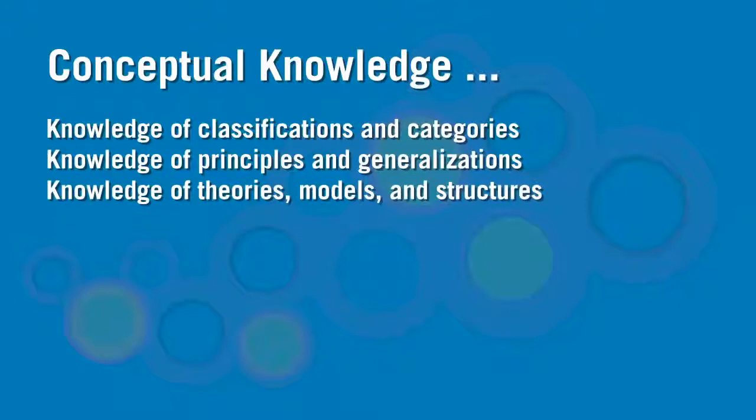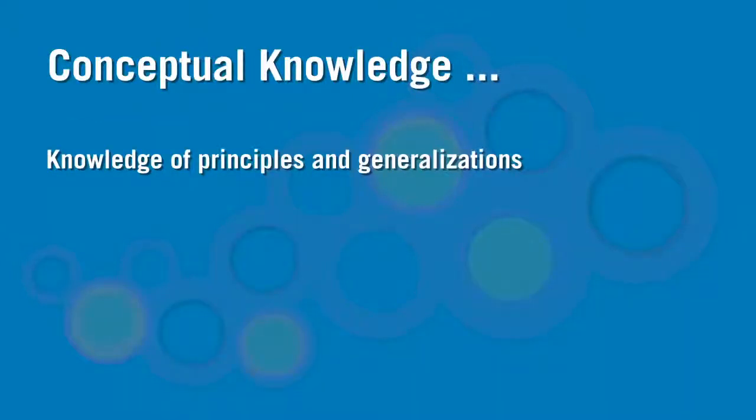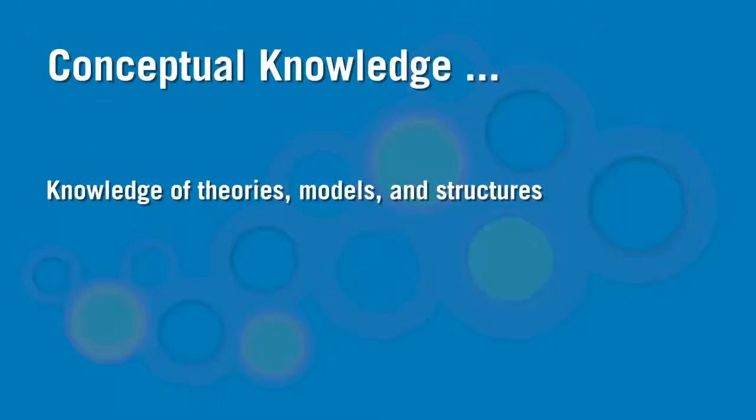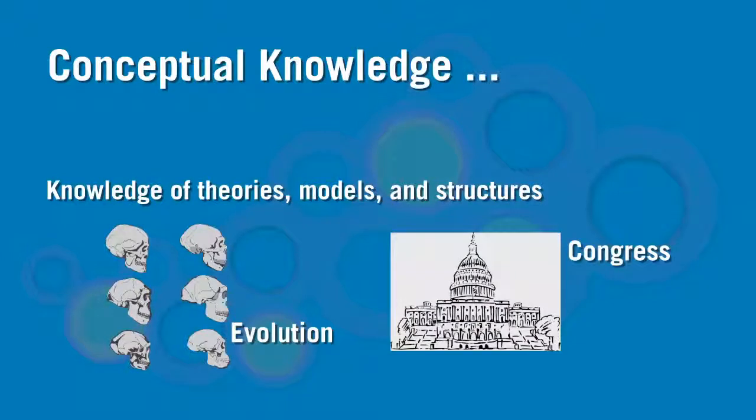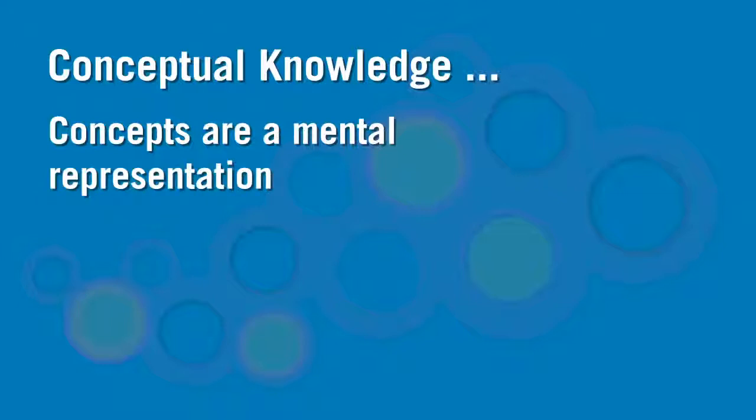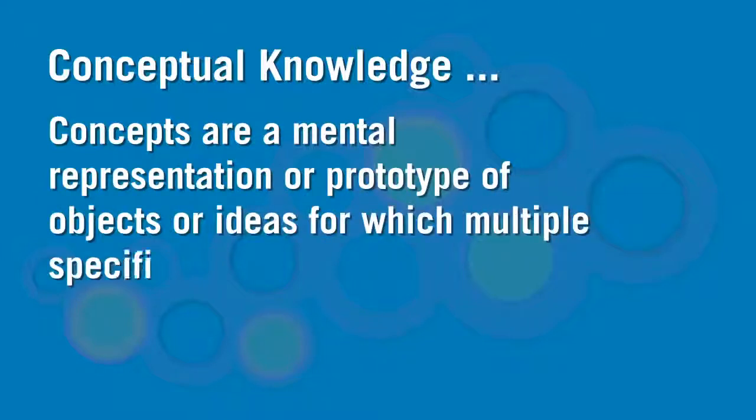An example of knowledge of classifications or categories may be the types of amphibians or mammals. An example of knowledge of principles and generalizations may be the law of supply and demand. Anderson suggests that examples of knowledge of theories, models, and structures may be the theory of evolution or the structure of Congress. Ruth Colvin Clark suggests that concepts are a mental representation or prototype of objects or ideas for which multiple specific examples may exist.